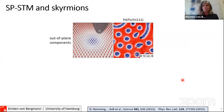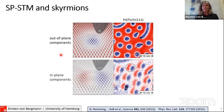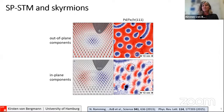With SP-STM we can prove these are skyrmions. A tip magnetized along the tip axis is sensitive to out-of-plane magnetization components, and images the skyrmion as a dot. However, a tip magnetized parallel to the surface plane is sensitive to in-plane components, and then the skyrmion appears with a two-lobe structure. All skyrmions show the same two-lobe structure everywhere on the sample — a characteristic of their unique rotational sense. From this measurement we can infer these are indeed magnetic skyrmions induced by the Dzyaloshinskii-Moriya interaction.